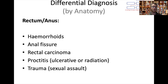A common cause would be haemorrhoids — these are dilated and engorged anal cushions. They can either be non-painful or painful depending on their position, either internally or externally. They'll usually present with some fresh red blood, sometimes after wiping, or patients might describe feeling a small lump at their anus.